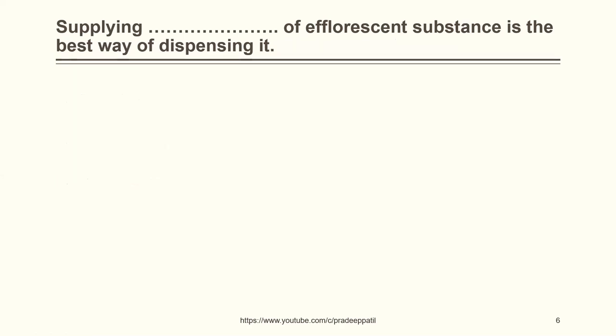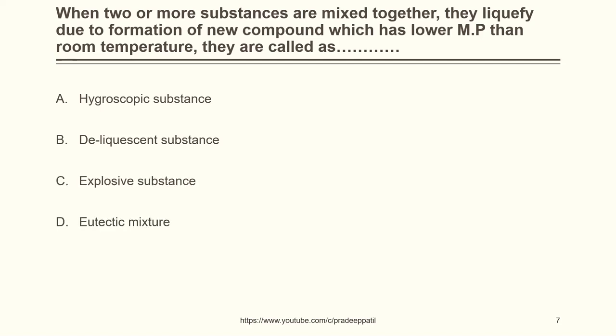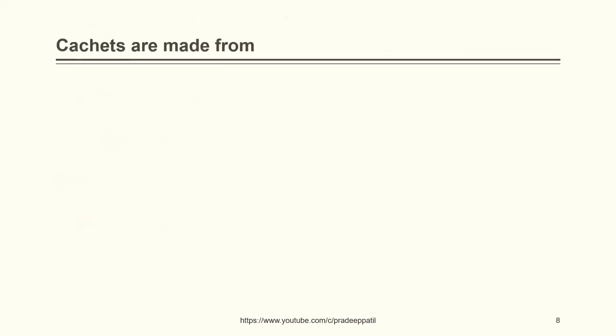Supplying dash of efflorescent substances — the best way of dispensing it is: anhydrous salt, powder, dosage form, or granules. The correct answer is anhydrous salt. When two or more substances are mixed together they liquefy due to formation of a new compound which has a lower melting point than room temperature, they are called: hygroscopic substance, deliquescent substance, explosive substance, or eutectic mixture. The correct answer is eutectic mixture. Cachets are made from: wheat flour, rice flour, gelatin, or none of the above. The correct answer is rice flour — it is made from flour converted into rice paper, which acts as a wafer capsule for drug delivery.